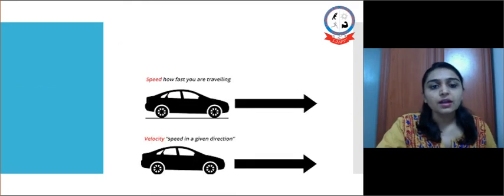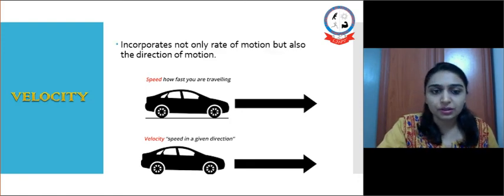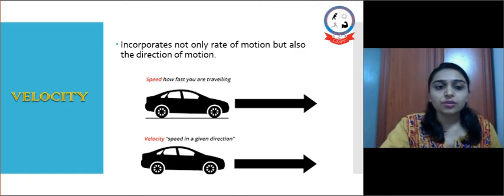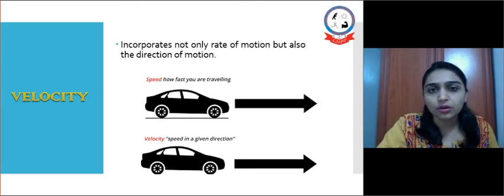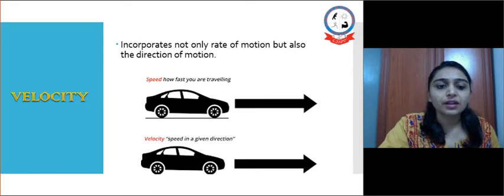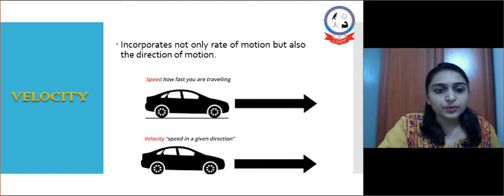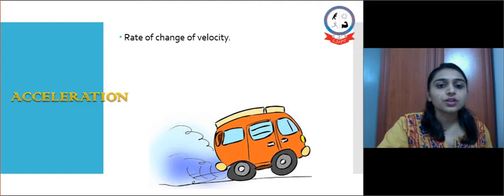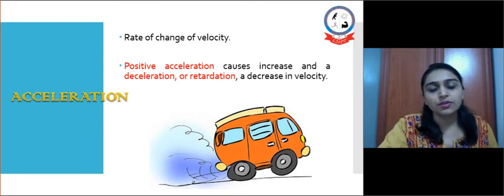Next is velocity. The difference between speed and velocity is direction — velocity incorporates not only the rate of motion but also the direction of motion. Speed is simply how fast you are moving, while velocity is speed including the direction of movement. Acceleration is the rate of change of velocity. Positive acceleration is an increase in velocity, while deceleration is a decrease in velocity.